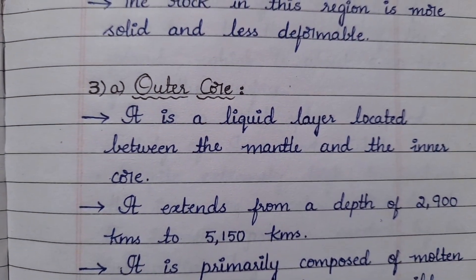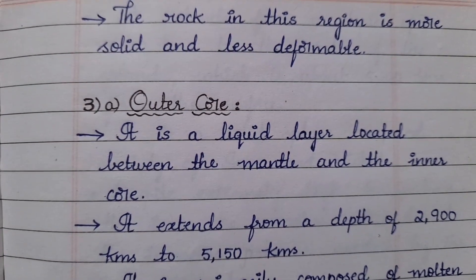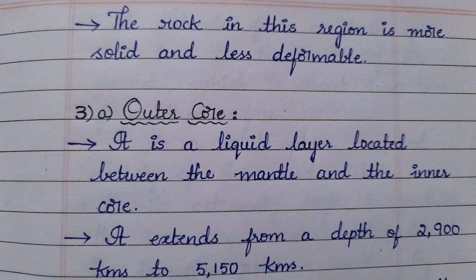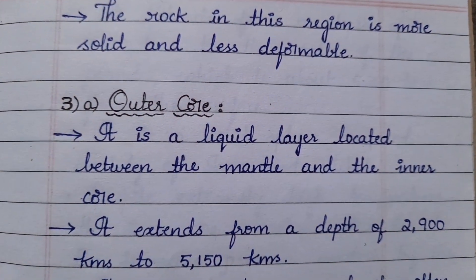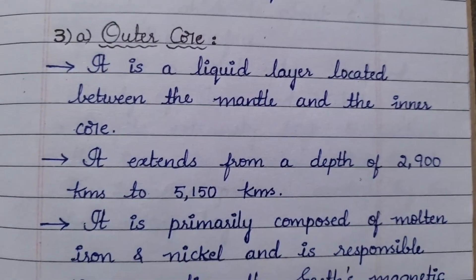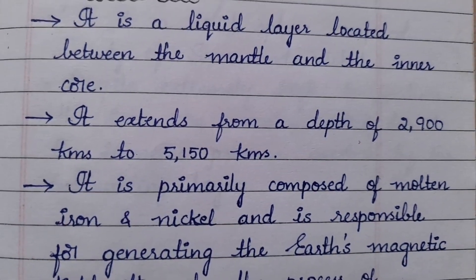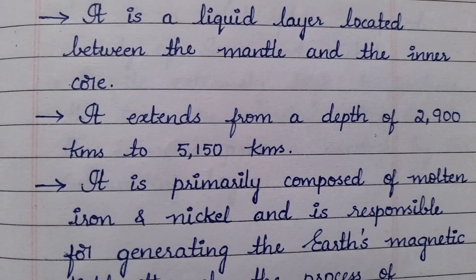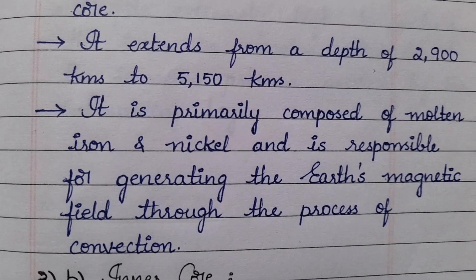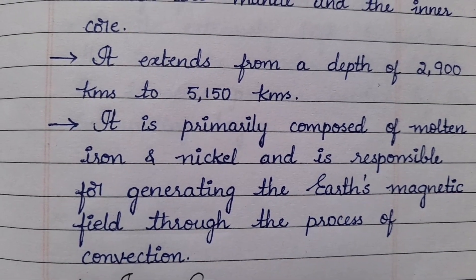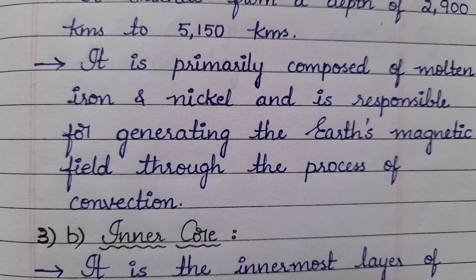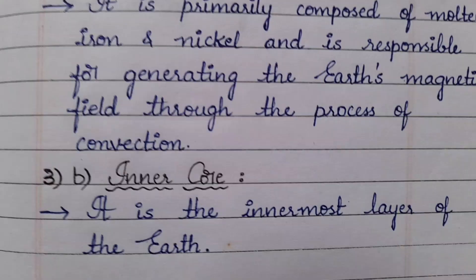Coming to the third layer — the core — divided into two types: outer core and inner core. The outer core is a liquid layer located between the mantle and the inner core. It extends from a depth of 2,900 kilometers to 5,150 kilometers and is primarily composed of molten iron and nickel. It is responsible for generating the earth's magnetic field through the process of convection.